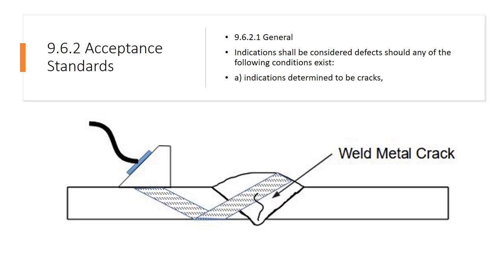9.6.2 Acceptance Standards General. Indications shall be considered defects should any of the following conditions exist. Indications determined to be cracks. If you've got a crack, it's a defect. You've got to take care of it.